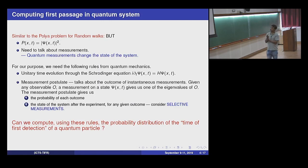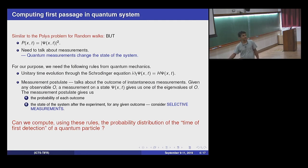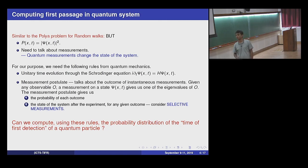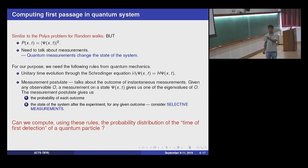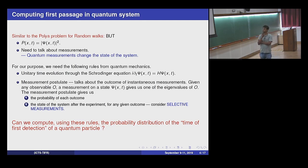There's something called the Pólya problem in random walks and Markov processes where you ask the same question: you have a random walker which starts from some point and you ask what is the probability it arrives at some given location. Interestingly, on a one-dimensional lattice with probability one you'll arrive at a given point, and in two dimensions as well. But in three dimensions, the survival probability is finite — meaning you may never arrive.